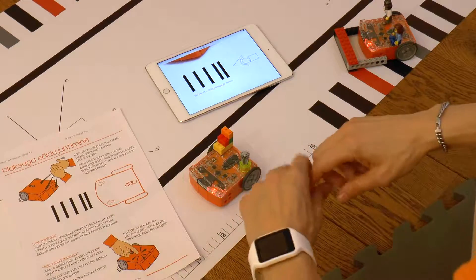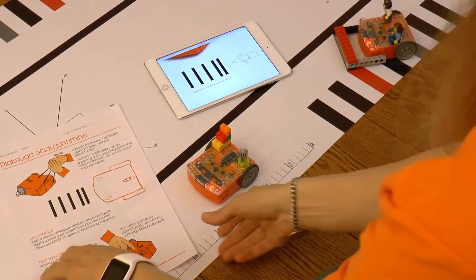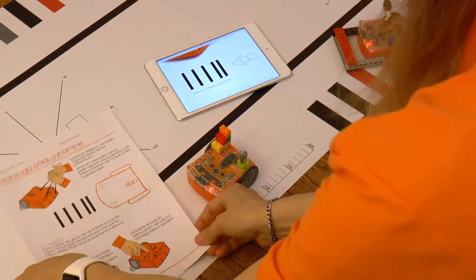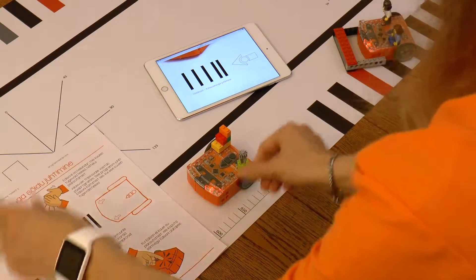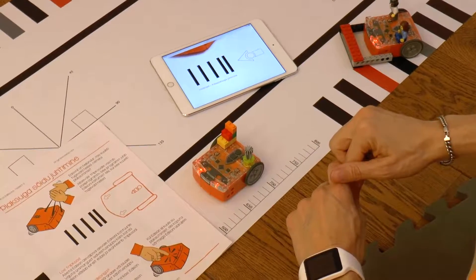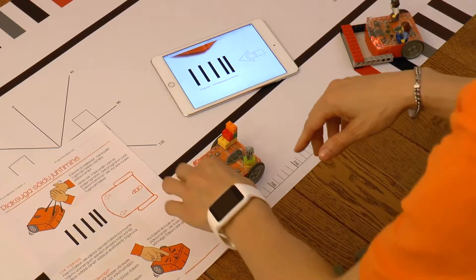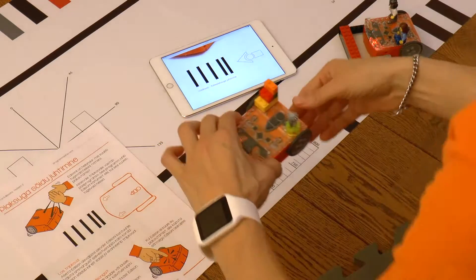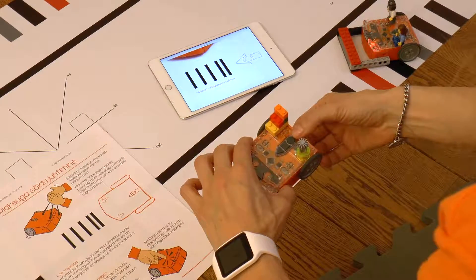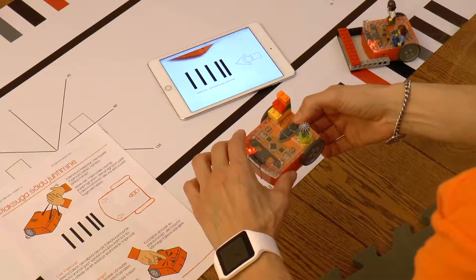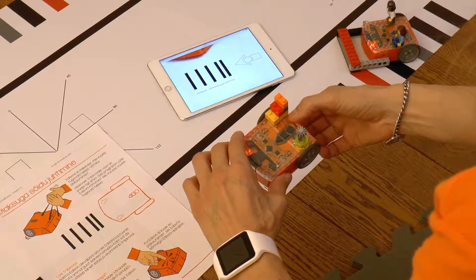Let's test the pre-made program which we can upload by driving over the barcode on worksheet number 2. You can get the worksheet file from right next to this video. If you plan to laminate the worksheets, then use matte laminate, since glossy laminate reflects light differently and Edison might not be able to read the barcode.